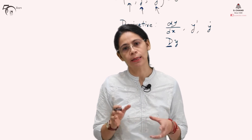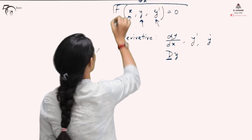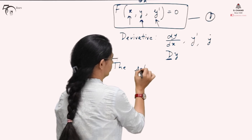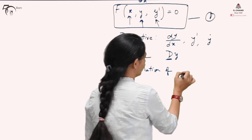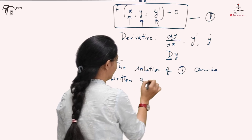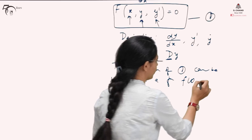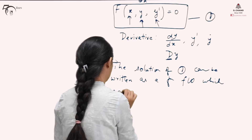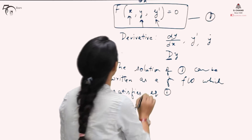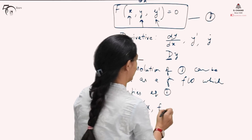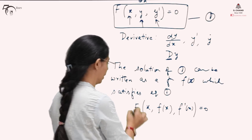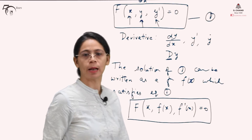Now, what do we mean by the solution of a differential equation? If this is your given differential equation, let us call it equation (1). The solution of equation (1) can be written as a function f(t) which satisfies equation (1). That is, if we write f(x, y) as f(x) and f′(x) such that f(x, f(x), f′(x)) = 0, that is how the solution of the differential equation is defined.